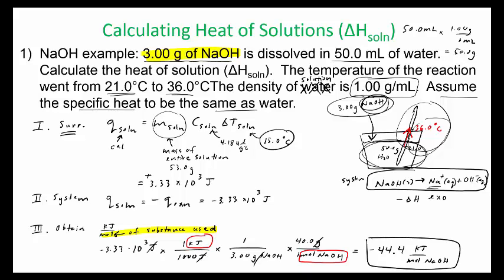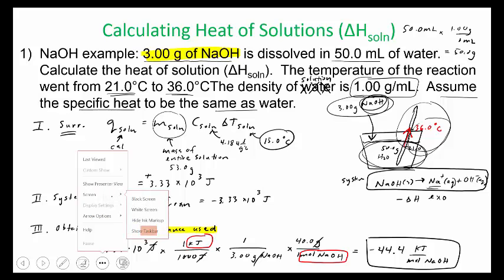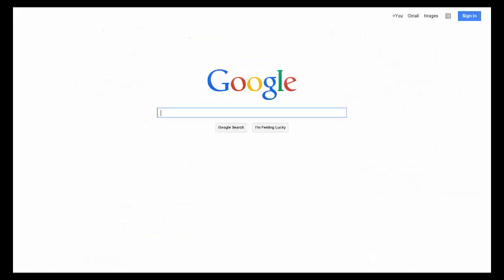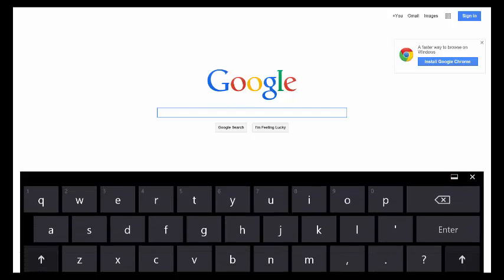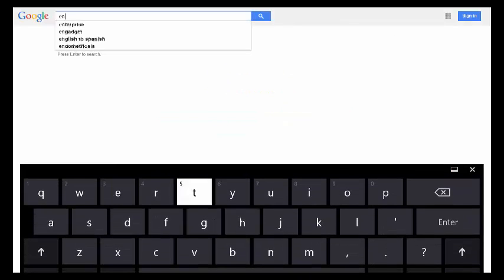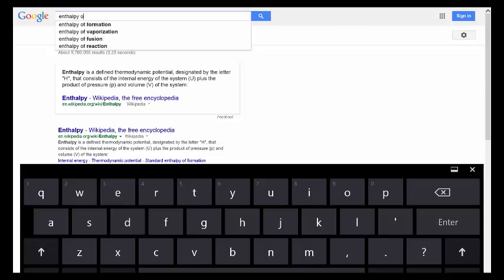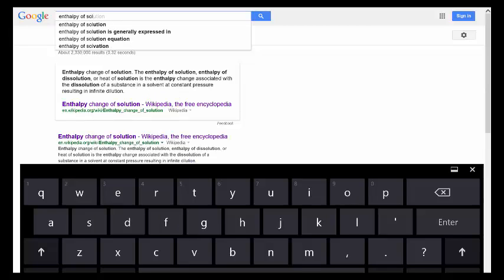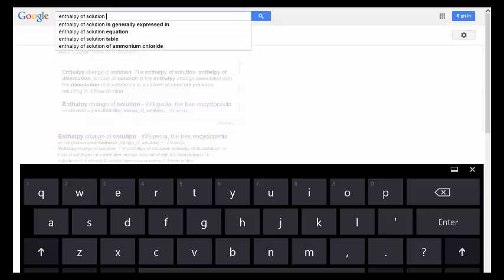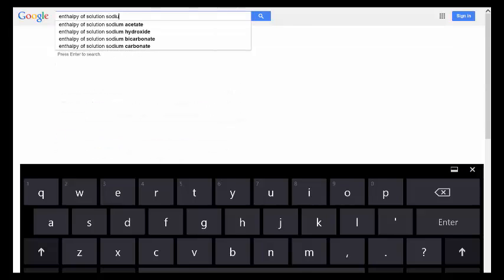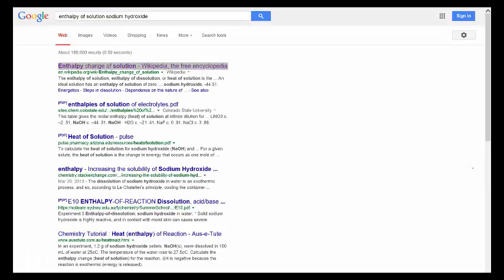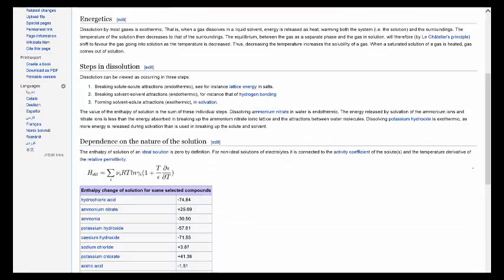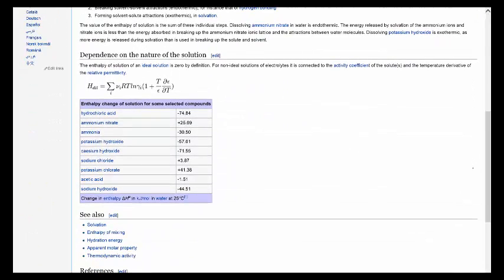And then you could see if this actually agrees with actual data. So you could go to, you could type in, so these are things you can Google. So you could type in the enthalpy of solution for sodium hydroxide. And so here we have this table of common chemicals and their heat changes when they dissolve.